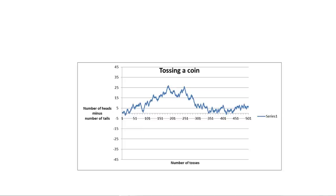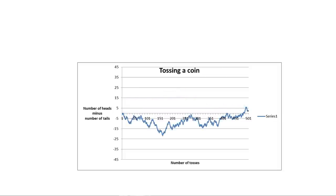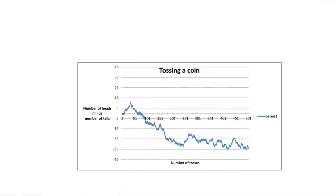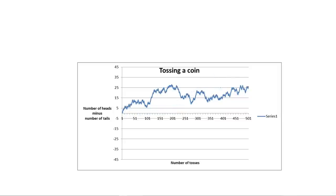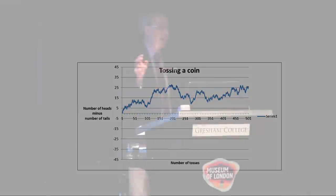Across all 10 simulations, there's often only one or two crossings of the axis across 500 tosses. Sometimes tails are ahead most of the time, sometimes heads — and these are just one after another. You can see why, for the very first slide I showed you, I had to keep going until I got one that was a bit more balanced to match what people might obviously expect.